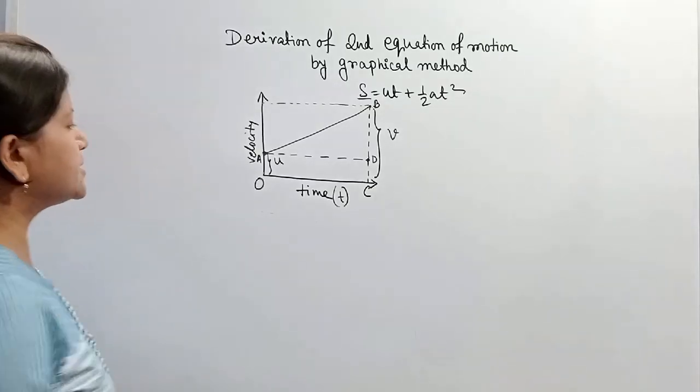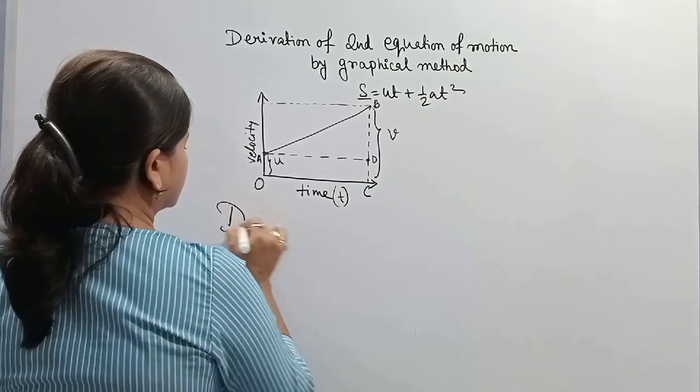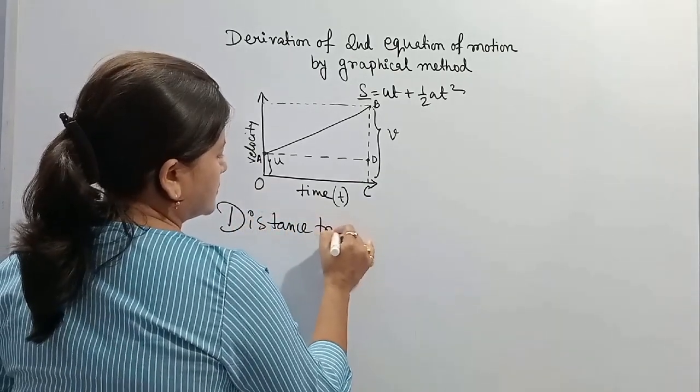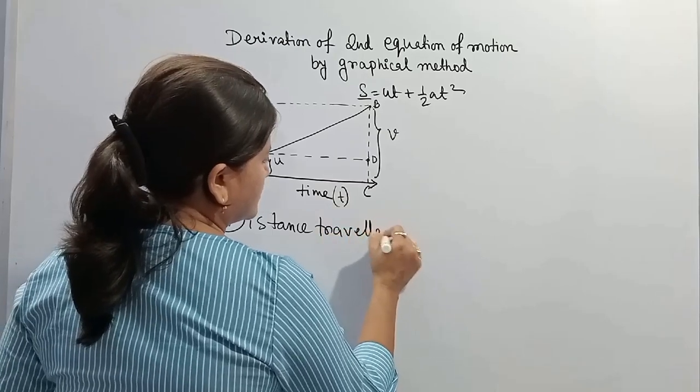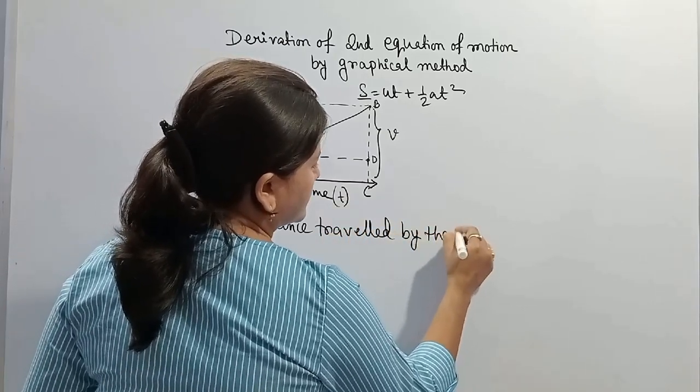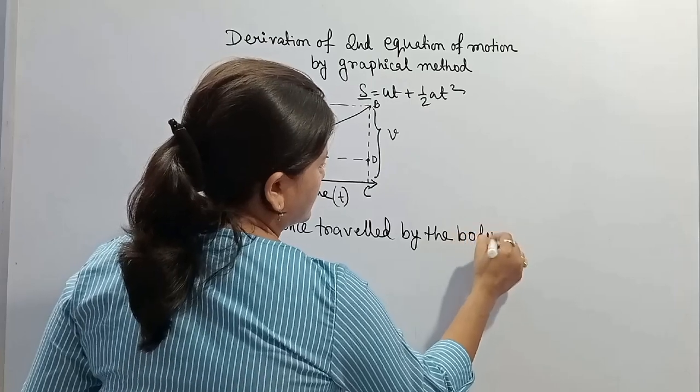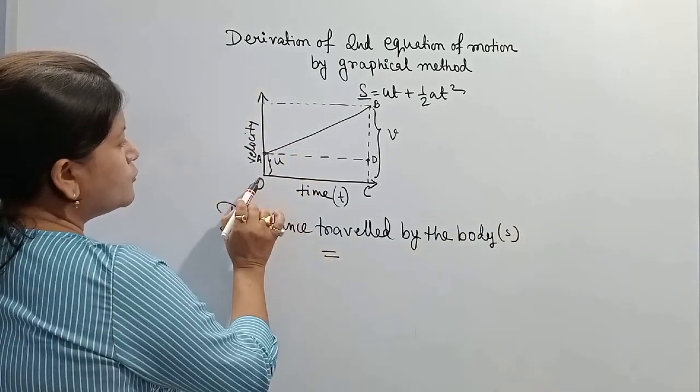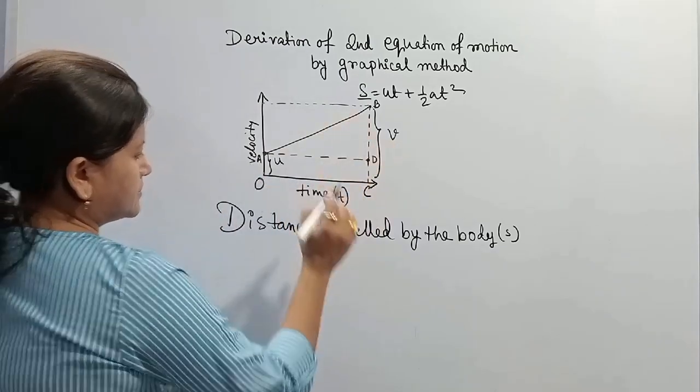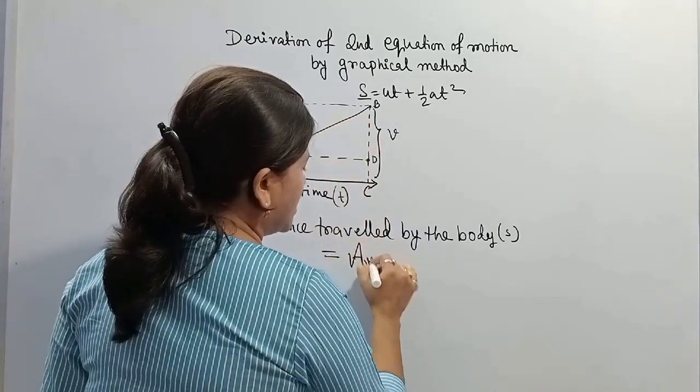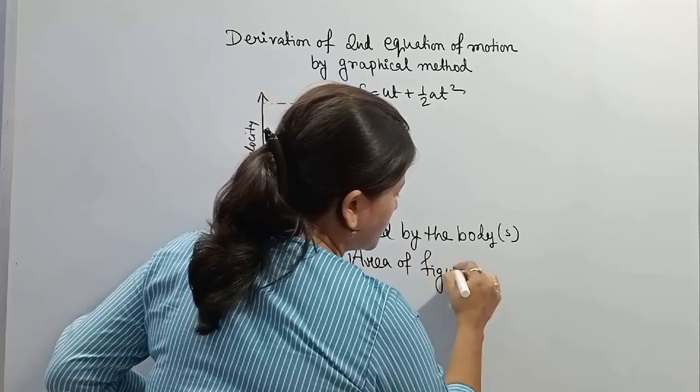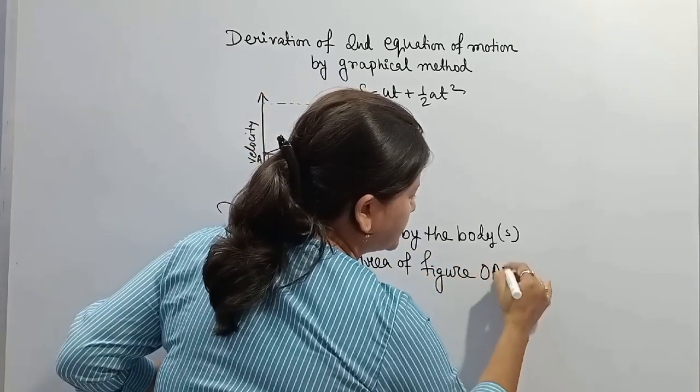Now distance travelled by the body, that is s, equals area of figure OABC.